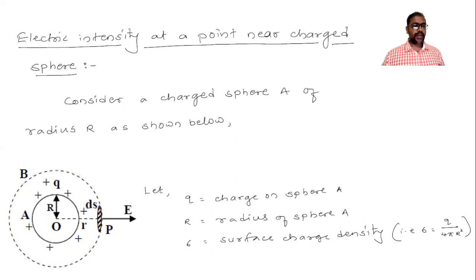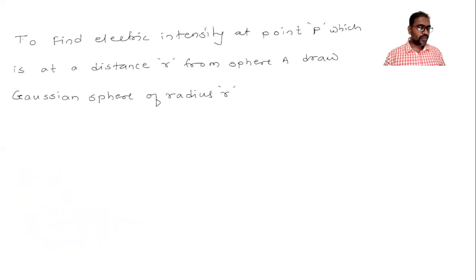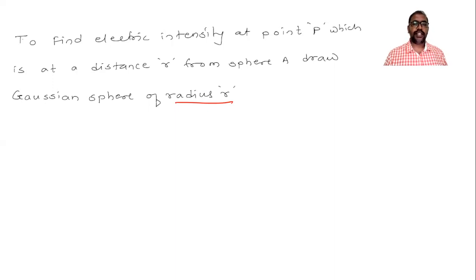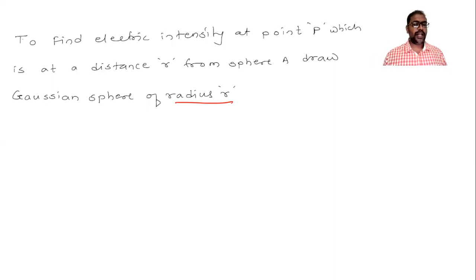To find electric intensity at point P at distance r from sphere A, we draw a Gaussian sphere of radius r. The procedure involves writing two formulas: one by the basic formula of electric flux, and second by Gauss's theorem. We equate both formulas to get the final expression.